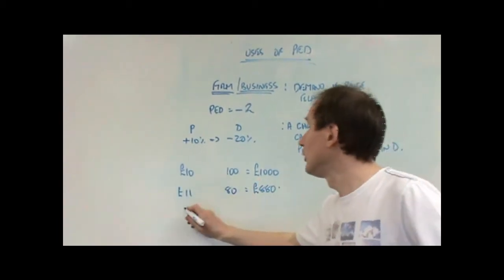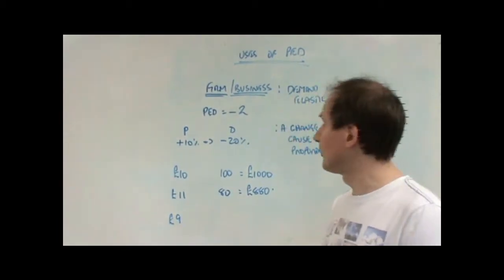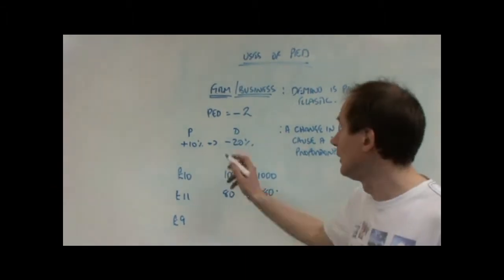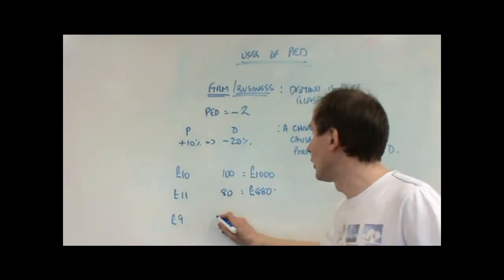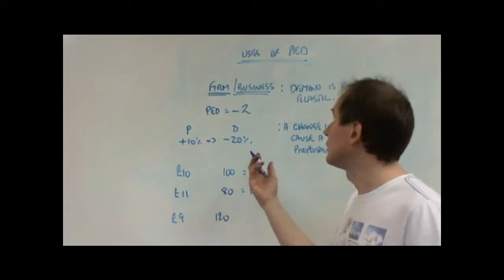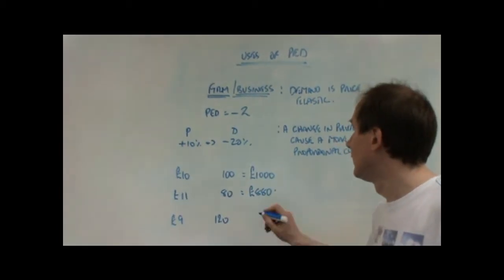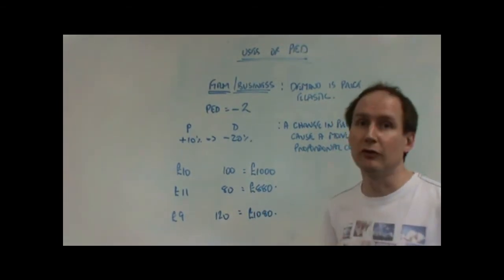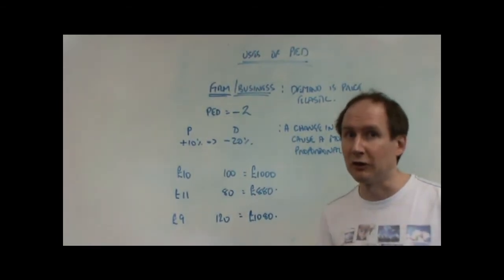If on the other hand, the firm had cut price to £9, similarly, in this case, a 10% fall in price, what would have happened is that demand would have gone up to 120, a 10% fall in price leads to a 20% increase in demand. And as a result, revenue would have arisen for the firm to £1,080.